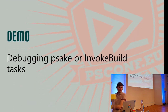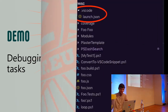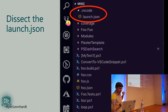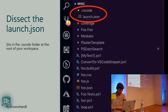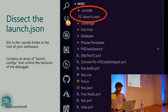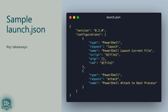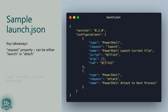Now we'll look at how to customize the PowerShell debugger in VS Code using the launch.json file. This file lives in a directory called .vscode within the workspace folder you've opened in VS Code. It contains an array of launch configs that control the behavior of the debugger. The key properties are 'request' — which is either 'launch' or 'attach' — and 'type', which must be 'PowerShell'.